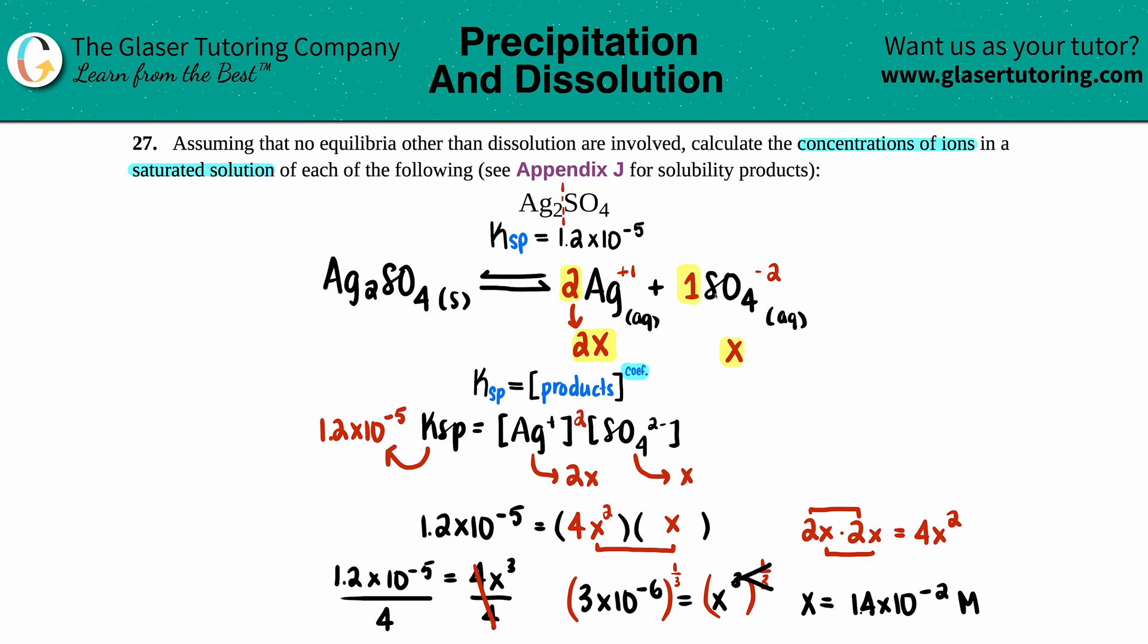But now we want the concentrations of the individual ions. So there was two of them: Ag⁺ and SO₄²⁻. Ag⁺ was 2x, and SO₄ was just the x value. So if SO₄ was just that x value, it's literally just that number. So this would be 1.4 times 10 to the negative second molarity. But now for the Ag, you just have to insert that 1.4 times 10 to the negative second and times it by 2. So basically, it would be 2.8 times 10 to the negative second, and it makes sense—it's a 2 to 1 ratio. And now we're done. So these are your two answers.